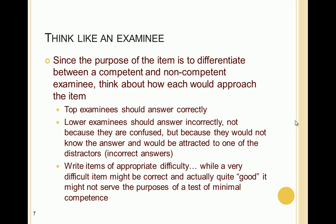If the purpose of an item is to differentiate between a competent and a non-competent examinee, think about how each would approach the item. Top examinees will typically answer correctly. Lower examinees should answer incorrectly — not because they are confused, but because they would not know the answer and would hopefully be attracted to one of the distractors. One consideration is to write items of appropriate difficulty. A very difficult item might be technically correct, but it might not serve the purposes of a test if the purpose is to measure minimal competence, especially for an entry-level certification.